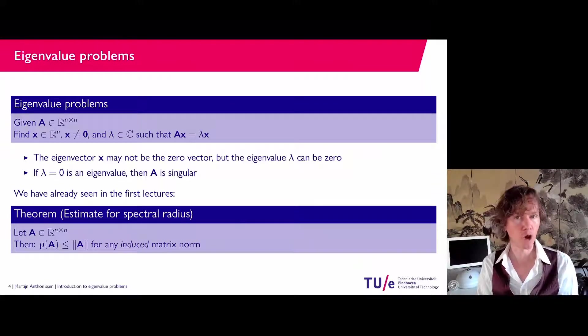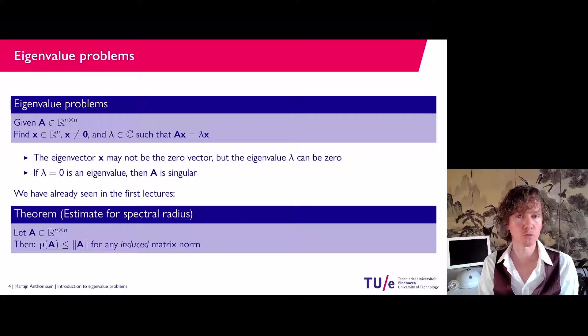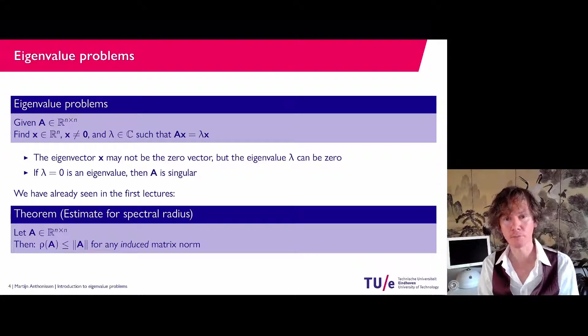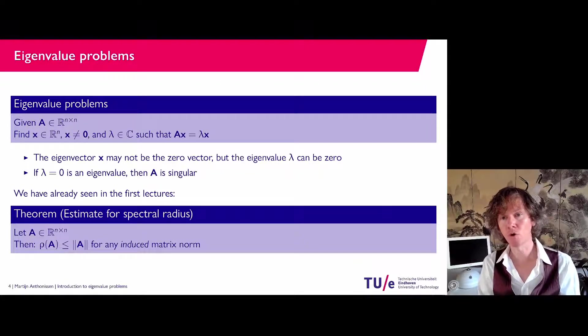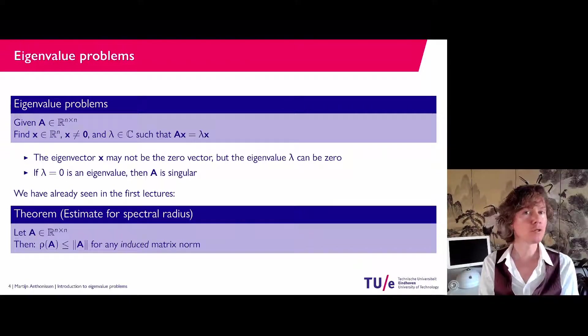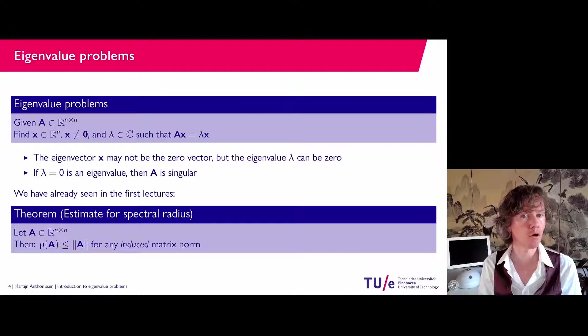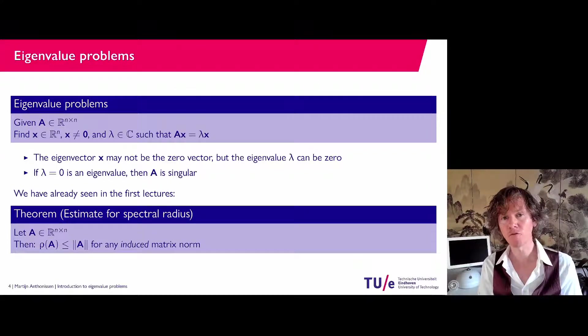They all give an upper bound for the spectral radius. The spectral radius is the largest eigenvalue if you look at absolute values. So if you take all the eigenvalues and you take the absolute value, then it's always bounded by any induced matrix norm. So that already tells us something about the location of the eigenvalues in the complex plane. But we can narrow it down more specific. And for that, we need Gershgorin's circle theorem.